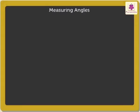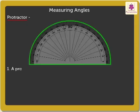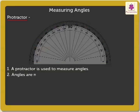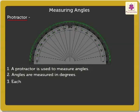Let us begin by learning about the geometric instrument protractor. A protractor is used to measure angles. Angles are measured in degrees. Each tiny mark on the protractor shows 1 degree.